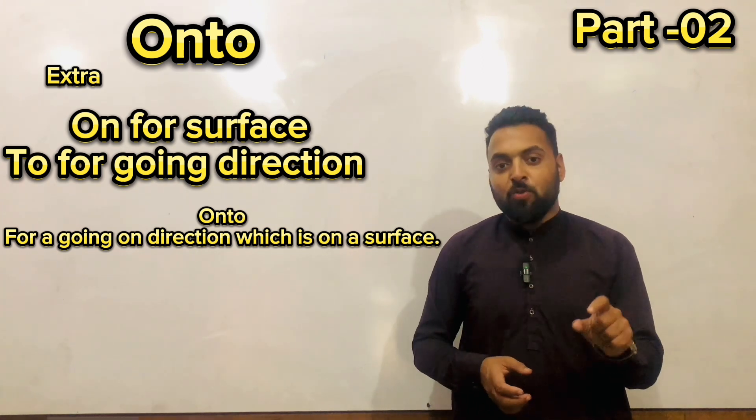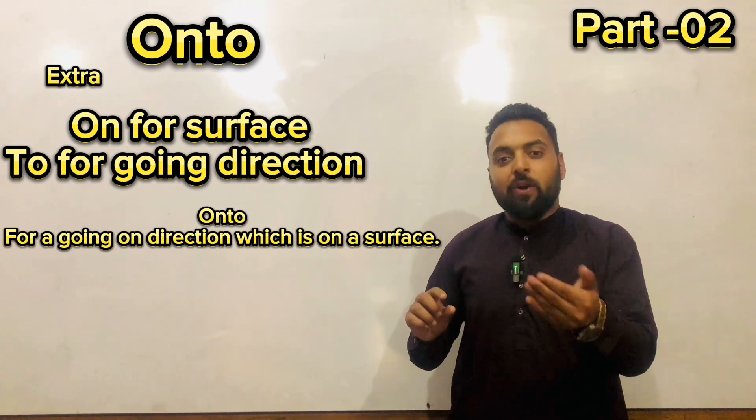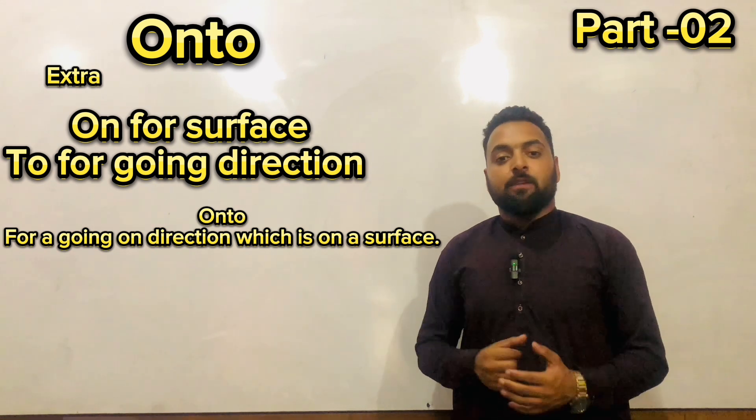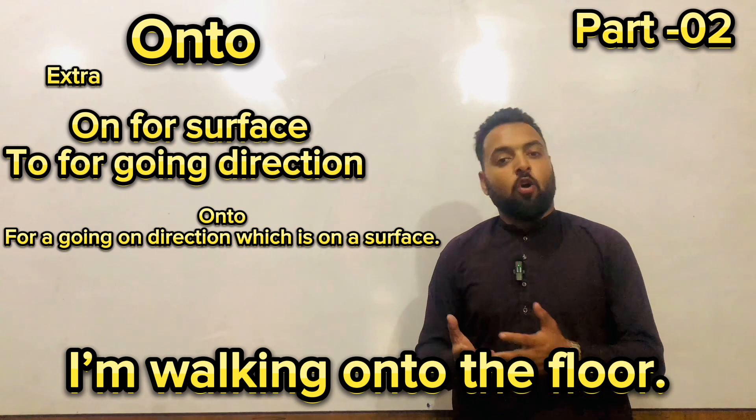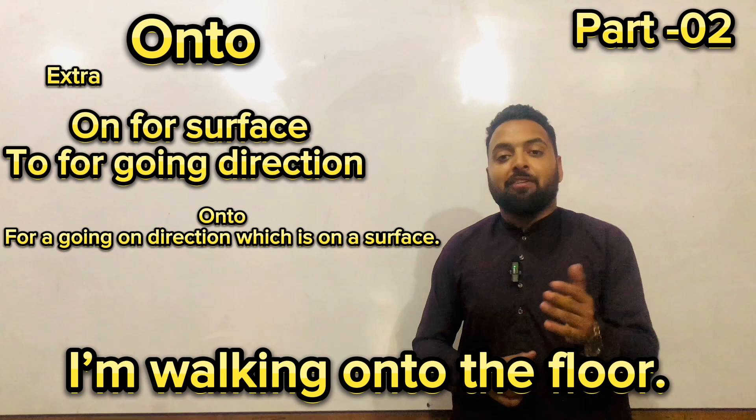To dono mein farq yahi hai ke 'into' matlab ke aap ka jo direction hai wo inside hai, aur 'onto' matlab ke aap ka jo direction wo surface ke upar hai. For example, I'm walking onto the floor. Most of the students kehte hain ke I'm walking on the floor jo bilkul ghalat hai. To aap ko kehna hai I'm walking onto the floor. I'm jumping in the river is wrong. I'm jumping into the river is completely correct.